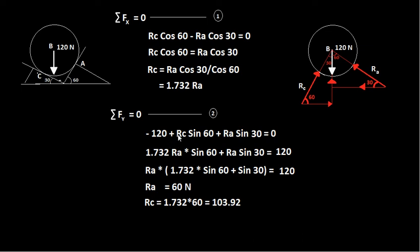Substituting RC = 1.732 RA into the vertical equation and moving 120 to the right-hand side: 1.732 RA × sin60 + RA × sin30 = 120. Taking RA as common: RA(1.732 sin60 + sin30) = 120. Solving this gives RA = 60 Newton, and therefore RC = 1.732 × 60 = 103.92 Newton.